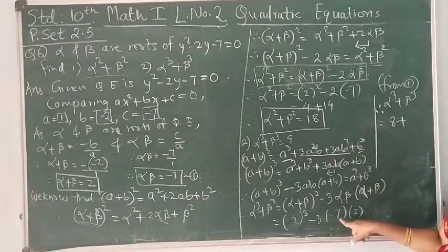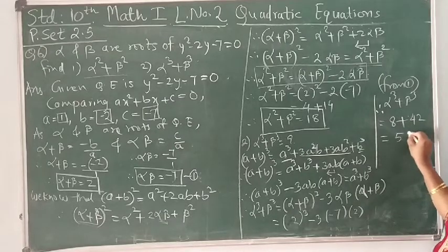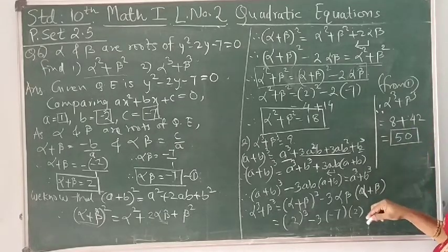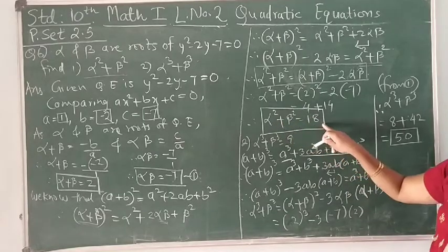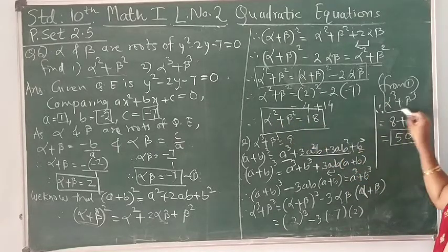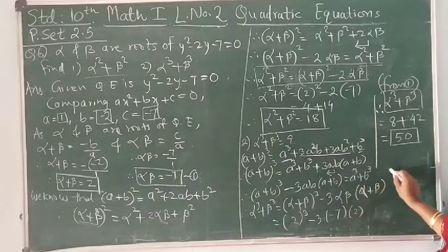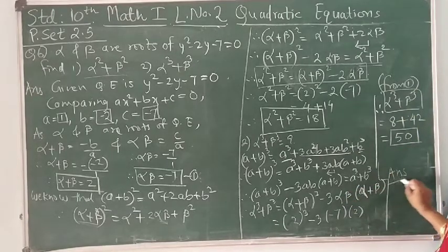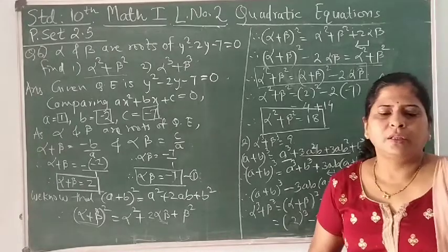Simplifying: 2³ = 8, and -3 × (-7) × 2 = +42. Therefore α³ + β³ = 8 + 42 = 50. So we have found both values: α² + β² = 18 and α³ + β³ = 50.